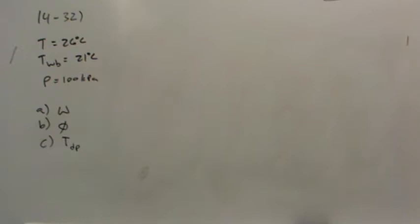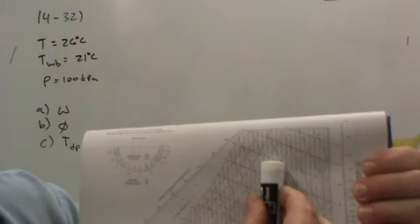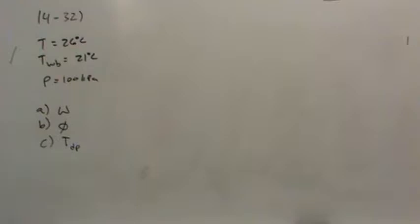Now one thing I recommend you do is get yourself a piece of paper or a ruler or something and lay it along that line. And that'll make your life a little easier. I really like the corner of a piece of paper. That helps a lot because then you can go horizontally as well as vertically. So 26 degree dry bulb temperature and then the wet bulb temperature, 21 degrees.